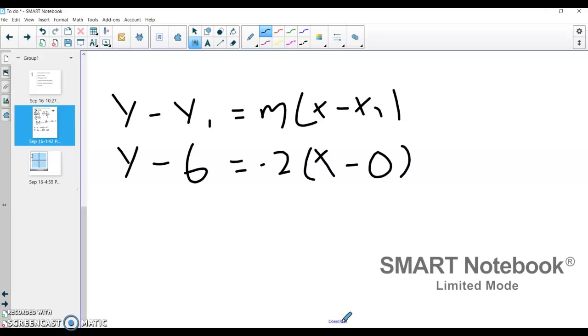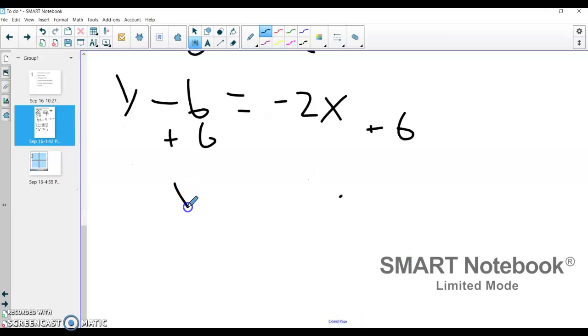Now, I just have to do a couple of things. I need to distribute this 2 in over here. So I get y minus 6 equals negative 2x minus 0. So I'm going to leave that out, because 2 times 0 is 0. And then I'm going to add 6 to both sides. So my final answer for part a is y equals negative 2x plus 6.